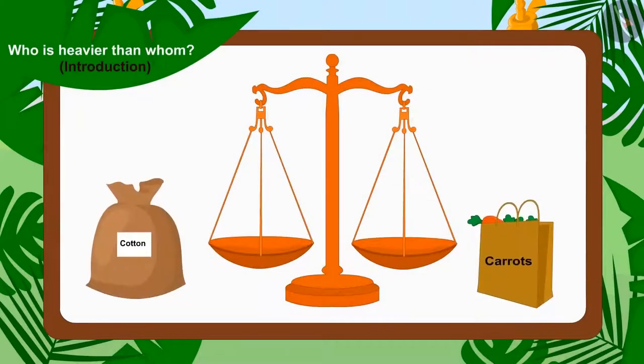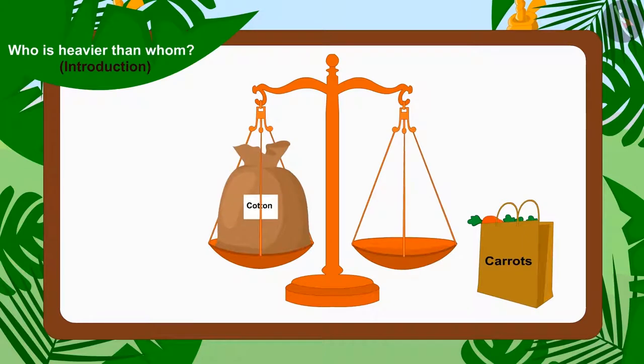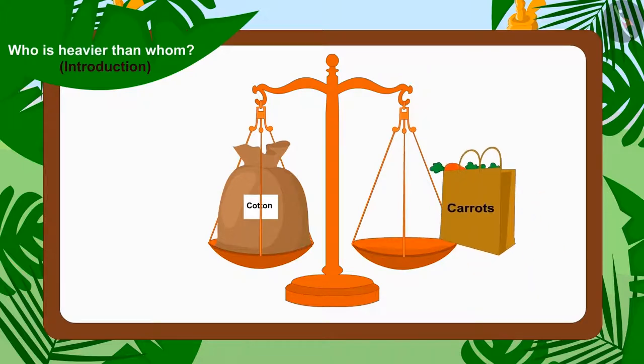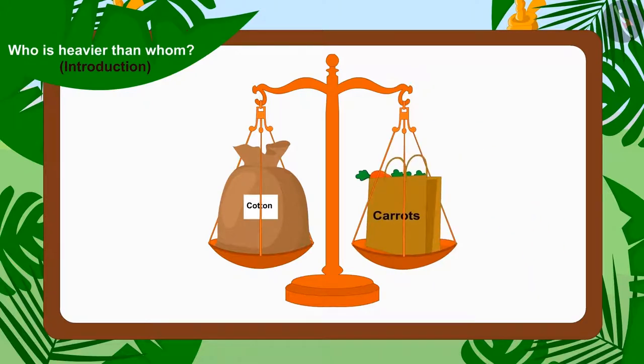Uncle first placed Bhola's sack on a plate of the scales and placed Bunny's bag of carrots on the second plate. Children, can you tell whose item is lighter and whose item is heavier? If you want, you can stop the video and find the answer.